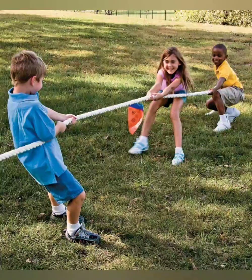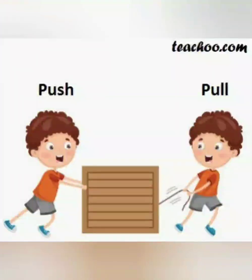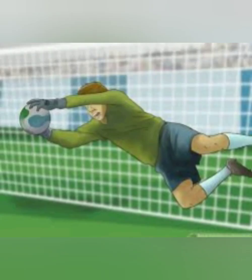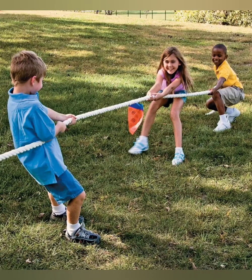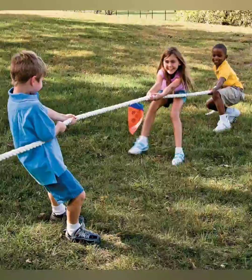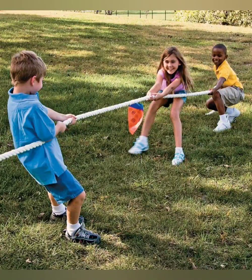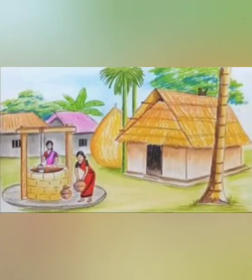Students, things do not move on their own. Things only move when we push or pull them. For example, a goalkeeper applies a push to stop a moving ball. A player applies a push to move the ball forward or to pass it. A team pulls the rope to win in the game of tug of war. And to draw water from the well, we pull the bucket to fetch the water.